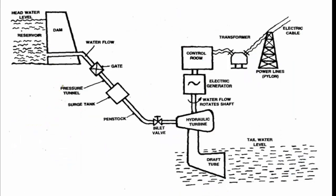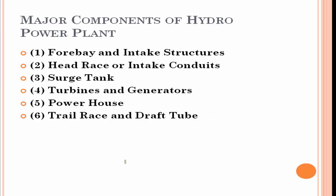Here is one more representation of a Hydel Power Plant. As I mentioned, we have a reservoir, a dam, then a gate, a pressure tunnel, a surge tank, a penstock, an inlet valve, a hydraulic turbine, a draft tube, and an electrical generator. So there are six main components of a hydro power plant.